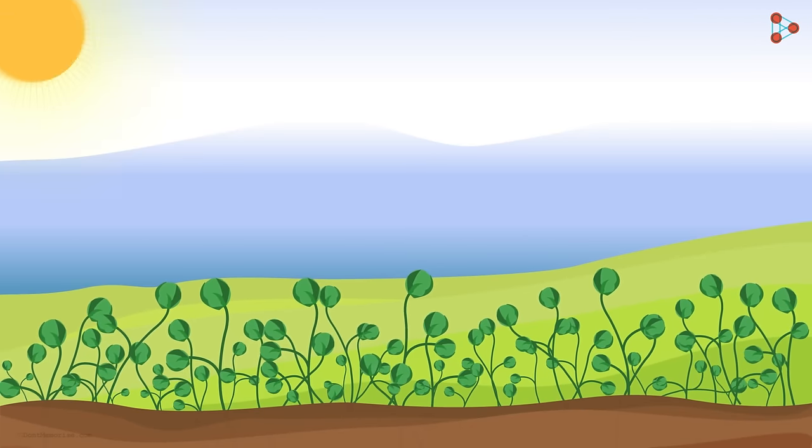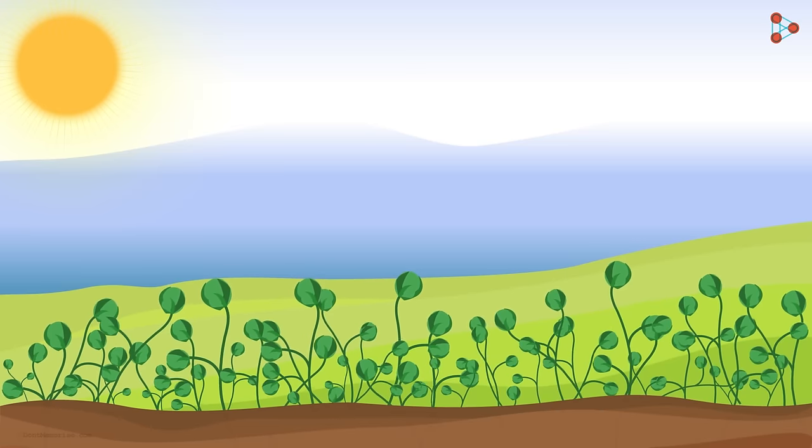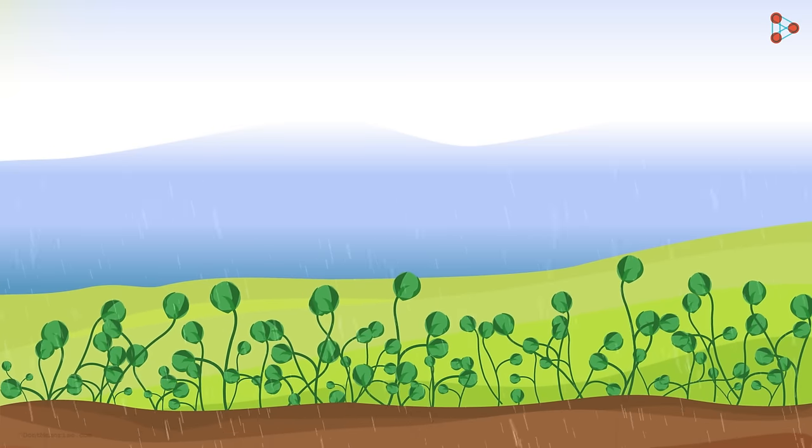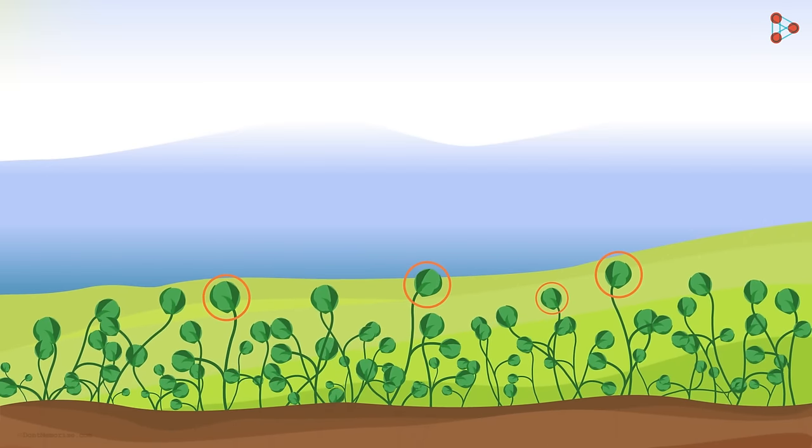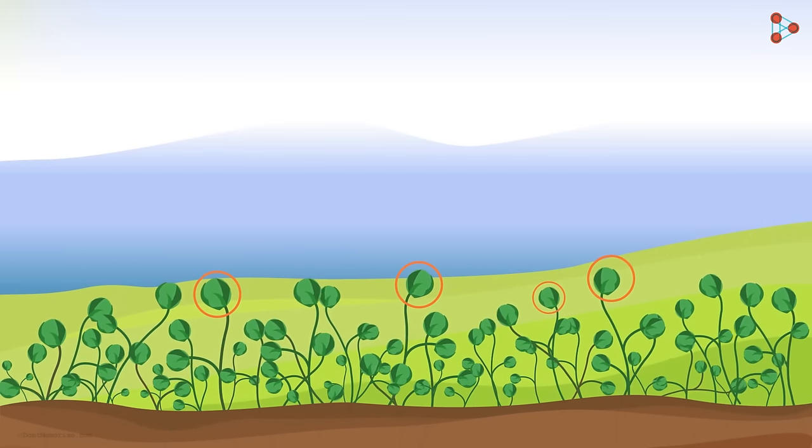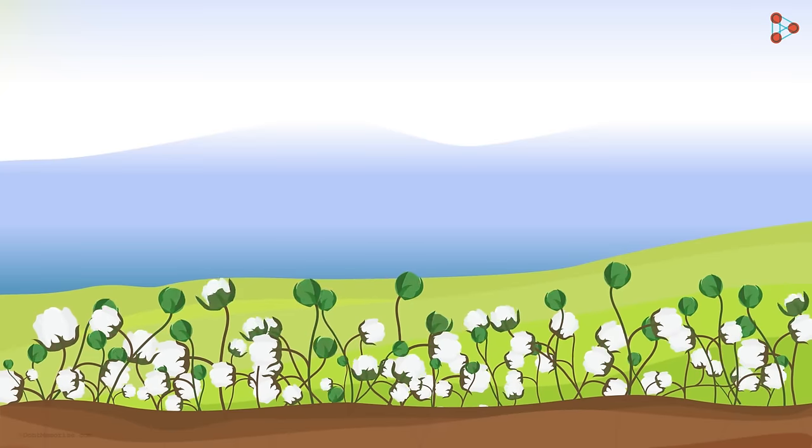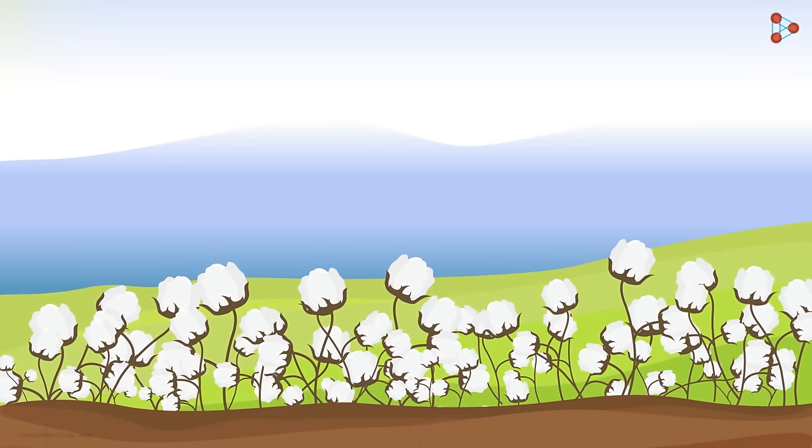The cotton plants require a lot of sunshine and a typically tropical climate with medium rainfall. Once the cotton boll, which is the fruit-like structure containing the cotton fibers, matures, it bursts open and the snow white cotton fibers are exposed.